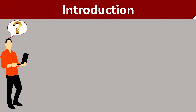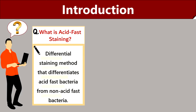Before proceeding to the theory of acid fast staining, let us answer some common questions related to this topic. First, what is acid fast staining? Acid fast staining is a differential staining procedure used to differentiate acid fast bacteria from non-acid fast bacteria based on cell wall differences. This method was originally introduced by Paul Ehrlich in 1882. Later, Ziehl and Nielsen modified this method in 1883, and for this reason acid fast staining is also called Ziehl-Nielsen staining.